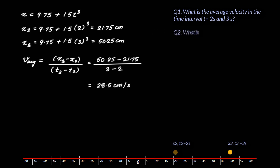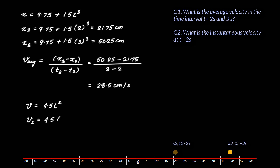Next question: what is the instantaneous velocity at t = 2 seconds? The instantaneous velocity at any point is found by taking the first derivative of x with respect to t. So v = dx/dt = 4.5t². The instantaneous velocity at t = 2 seconds equals 4.5 × 2² = 18 centimeters per second.